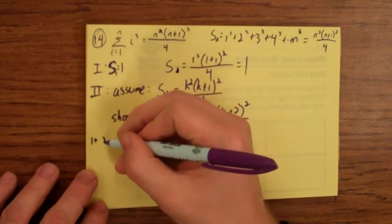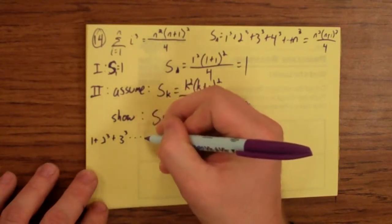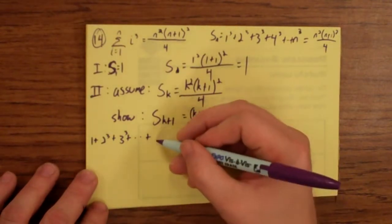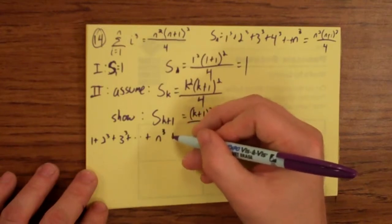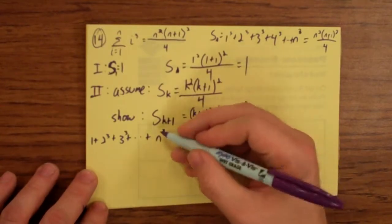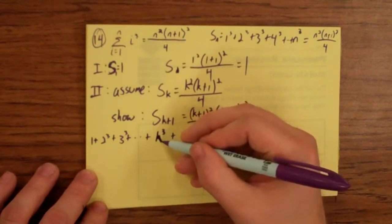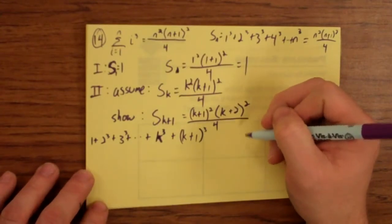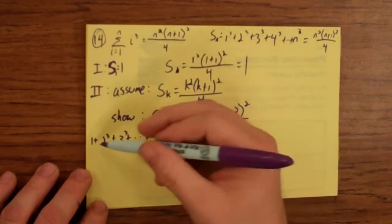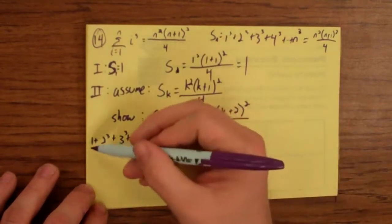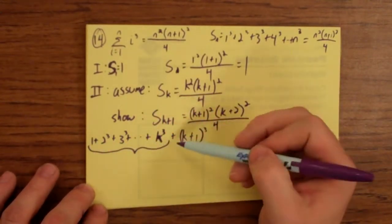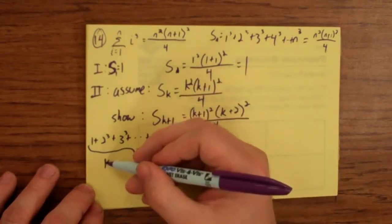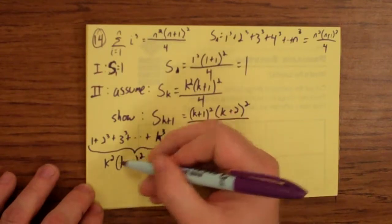We're saying 1 plus 2 cubed plus 3 cubed and so on. We want to show that we can use this formula for that, that adding all this up is this formula. Well, again, this first part, the first k terms can be, we assume, found by this formula. This is k squared times k plus 1 squared over 4.